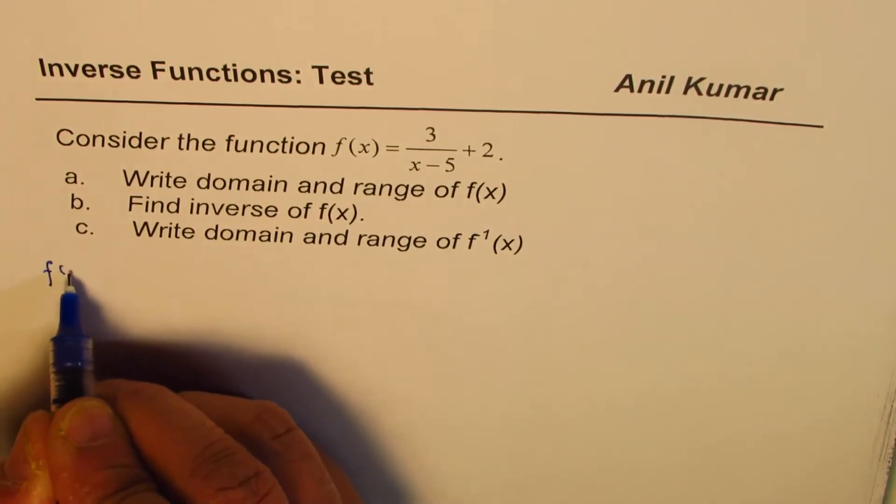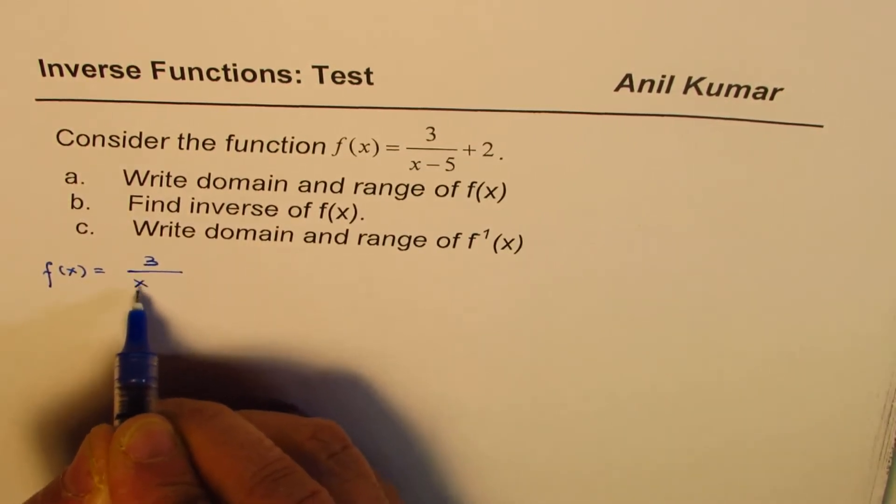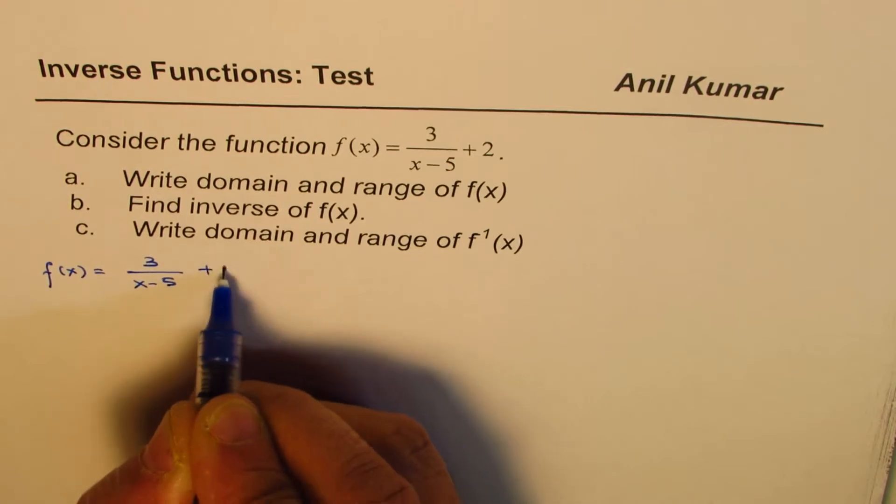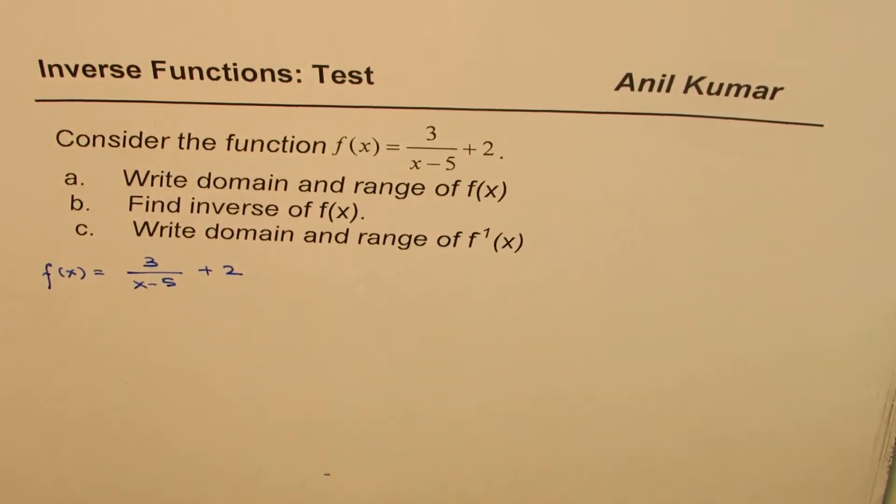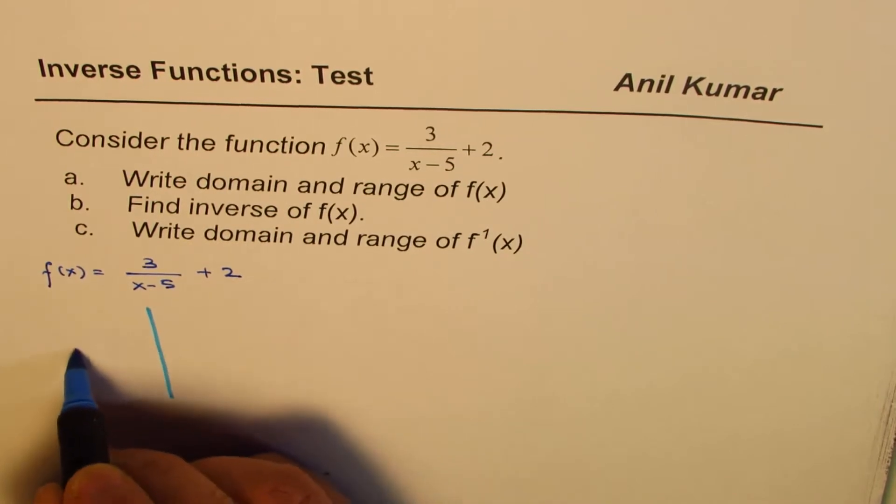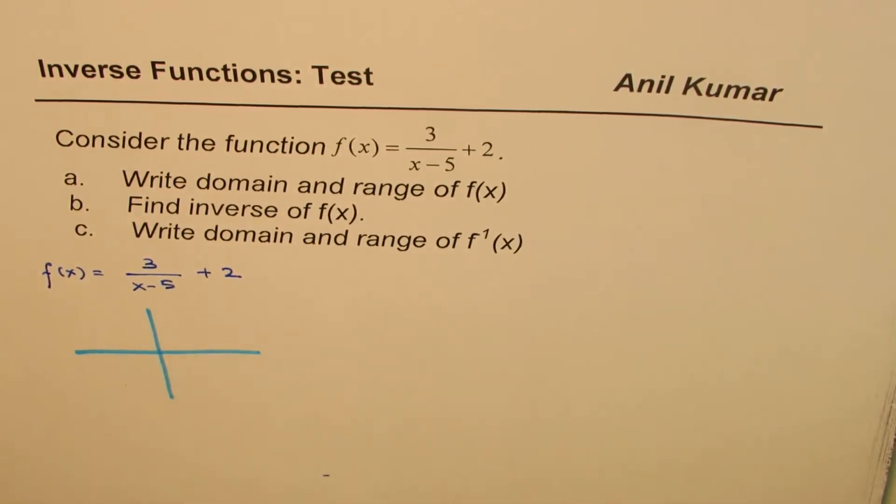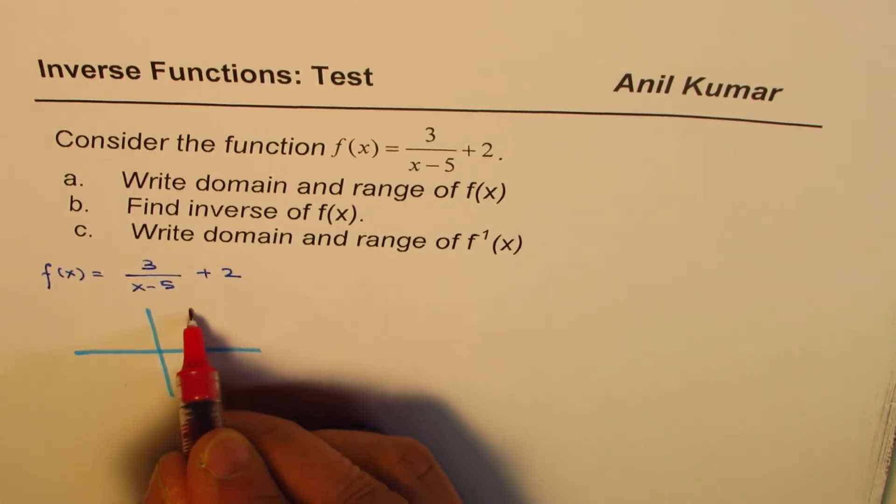So let's consider this function f(x) equals to 3 over x minus 5 plus 2. Let me sketch this quickly. It's not a difficult question to work with. It's a reciprocal function, shift it 5 units to the right. So it will have this vertical asymptote at 5.